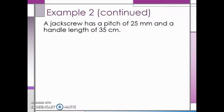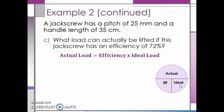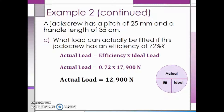Using the same jack screw as the previous two parts, we want to know what load can actually be lifted if this jack screw has an efficiency of 72%. Looking at the equation circle for efficiency and covering up actual, we see it is equal to the efficiency multiplied by the ideal load. The efficiency is 0.72, which is 72% in decimal form, and the ideal load from the previous part is 17,900 newtons. Multiplying, we see that the actual load is 12,900 newtons.